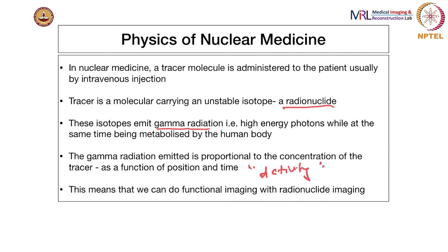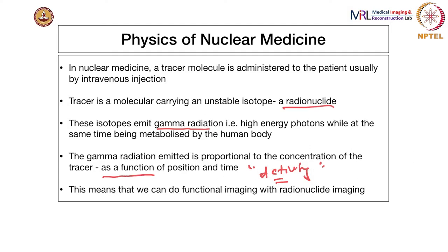We can show this using simple mathematics. For instance, in X-ray CT, the underlying quantity being measured is the linear attenuation coefficient, which is proportional to the atomic number density of the element. In radionuclide imaging, even though we count gamma radiation photons, what is actually projected as a mean photon count reflects the activity concentration, which in turn gives an indication of the actual concentration of the radio tracer at a particular location. We measure this as a function of both position and time. This entire system is known as functional imaging rather than anatomical imaging.